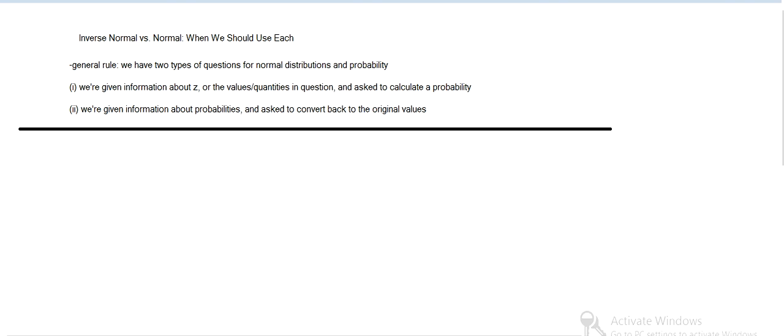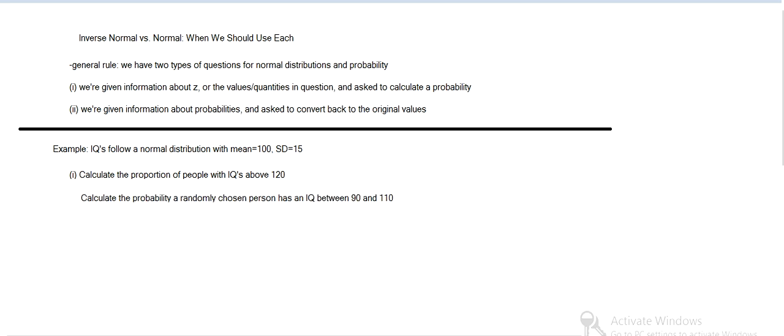For example, IQs follow a normal distribution centered around 100 with standard deviation 15. If we want to calculate the proportion of people with IQs above 120, or the probability a random person has an IQ between 90 and 110, or if someone is considered gifted if they have an IQ above 130 and we want the proportion of people that are gifted—all those are that first type.